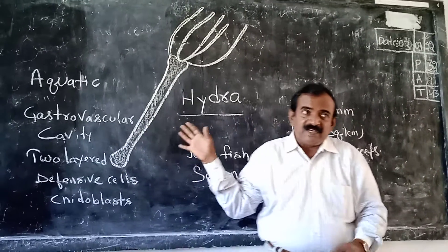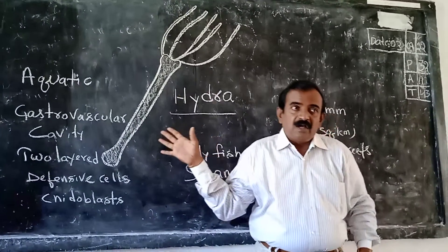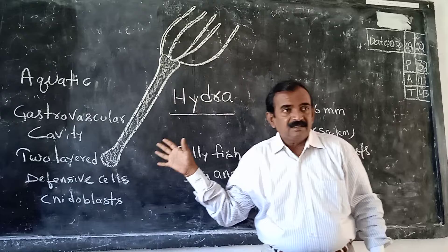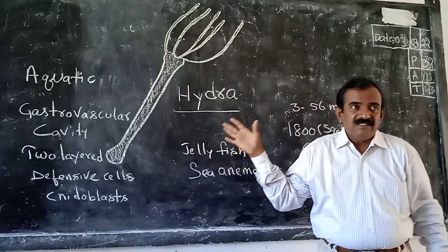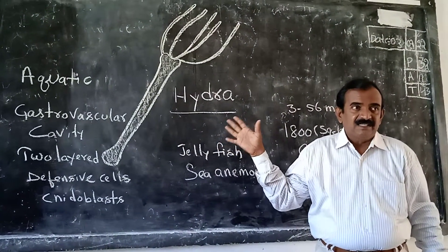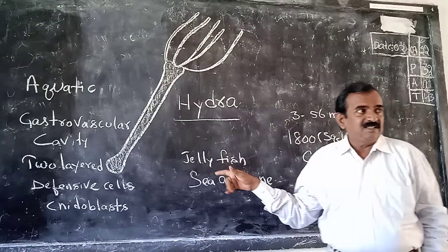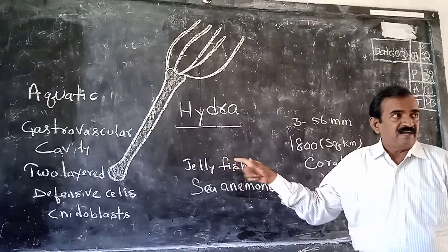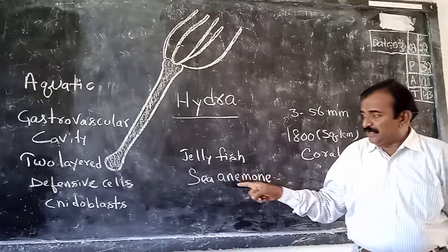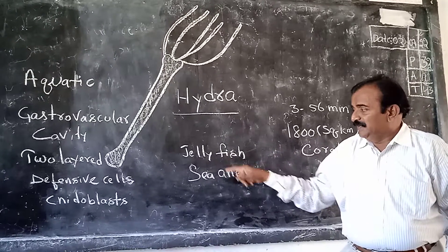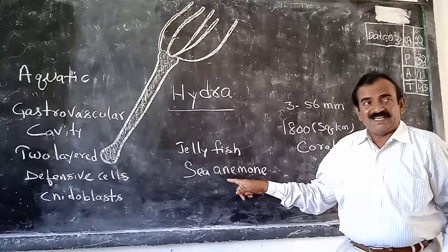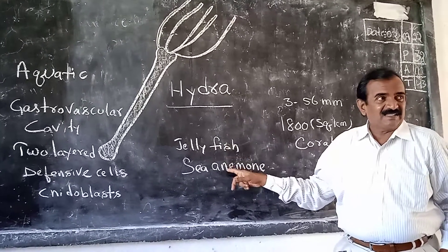Again, you see examples for Coelenterata. Examples for Coelenterata — here you see the presence of Hydra. And I wrote Jellyfish and Sea Anemone. These are common examples.